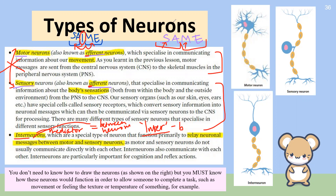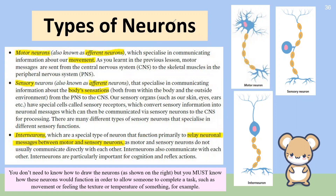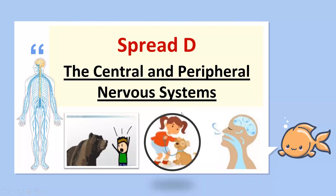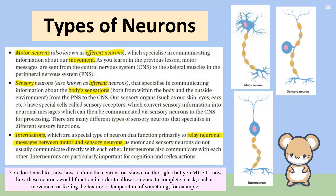That's sensory and motor neurons done. The CNS and PNS nervous system content — don't stress too much about that yet. We haven't covered nervous systems yet, but we will be covering that on Monday. Once we cover Spread D, we'll make more reference to those nervous system names and divisions. That's where we'll stop the recording for today.